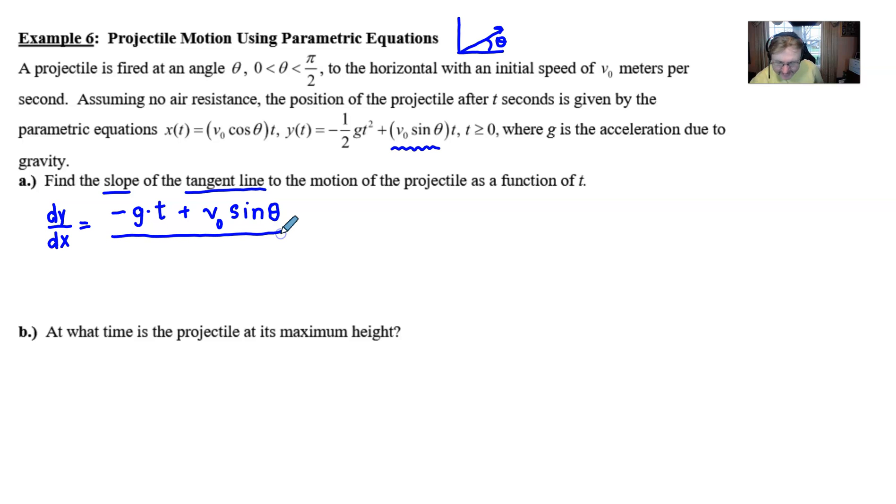Divide that by the derivative of our x with respect to t, which is just going to be the coefficient of the t that we see in the x of t equation, v sub not times cosine theta. And it's very easy to think, okay, well what do I do from here? Well, you don't do a thing.